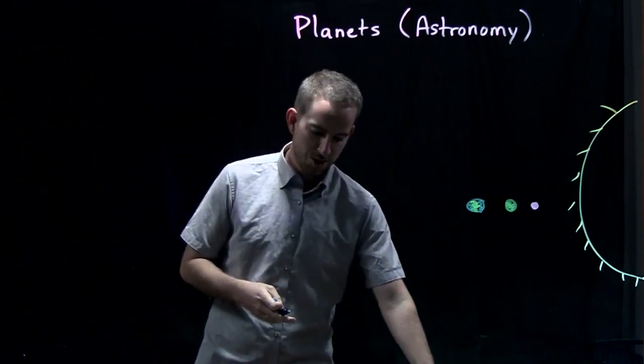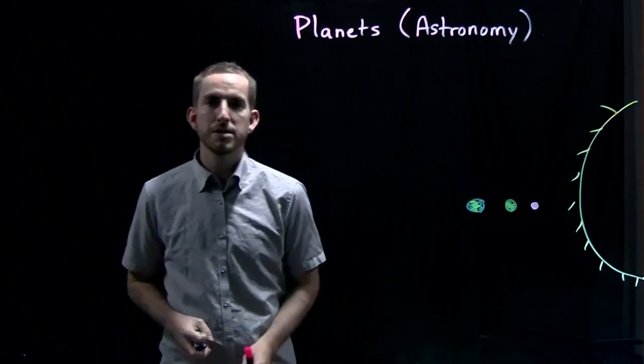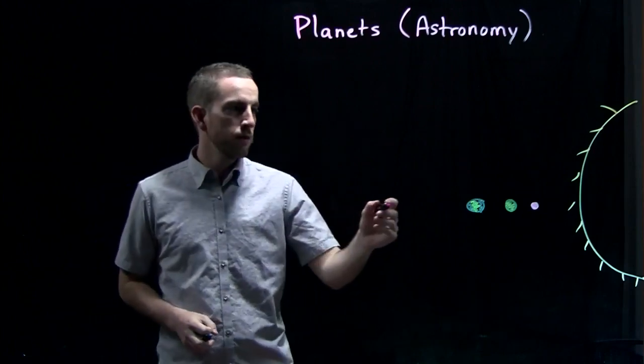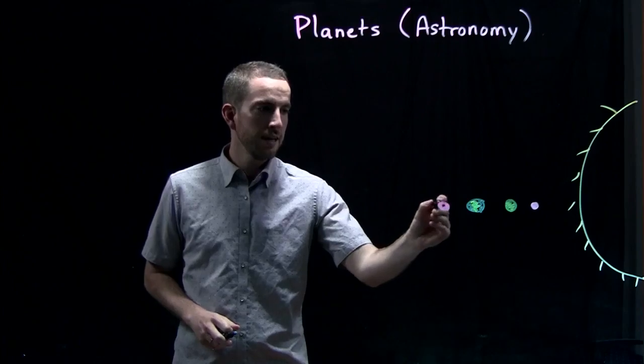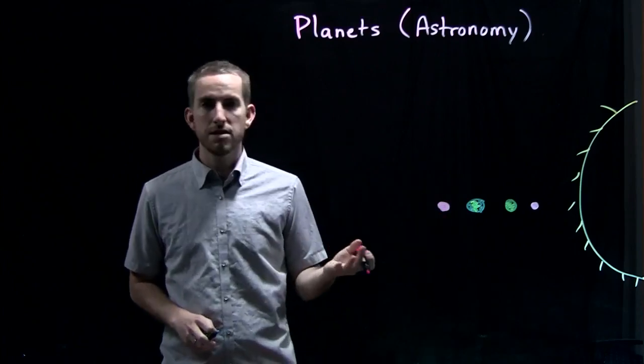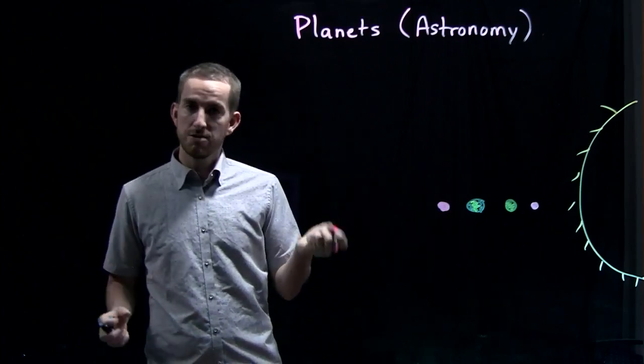And after Earth comes Mars. Mars is a little bit smaller than Earth. And it's red. Mars. And in Korean it's 화성. It's like fire. It's red.